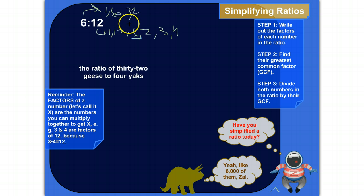So, last step, we divide both numbers in the ratio by this greatest common factor. So, 6 divided by 6 is 1. And 12 divided by 6 is 2. So, the ratio of 6 to 12 actually simplifies to 1 to 2.